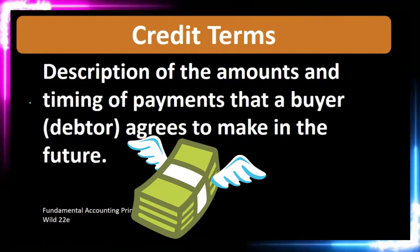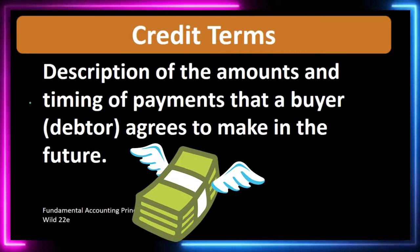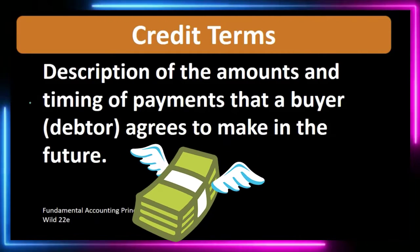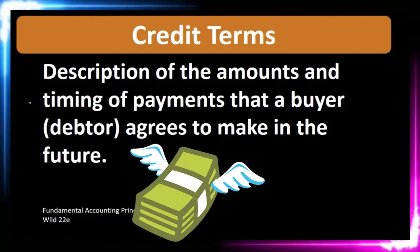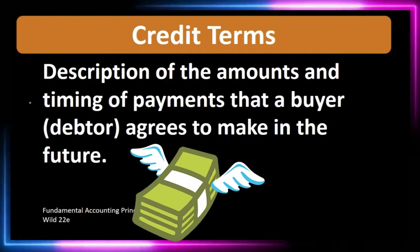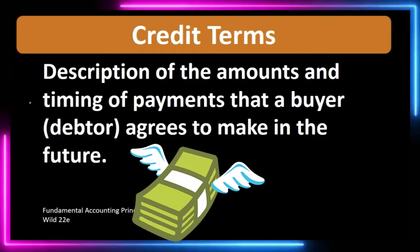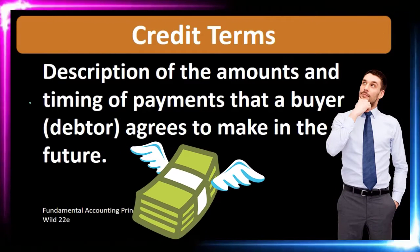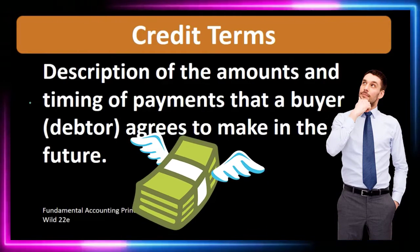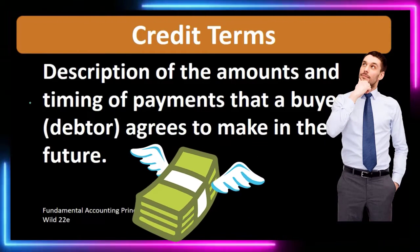If we have a transaction that takes place and it was made on account — meaning there's some kind of IOU — the payment has not yet been received, so we need the terms as to when the payment should be received.